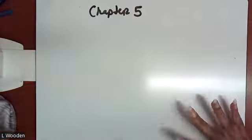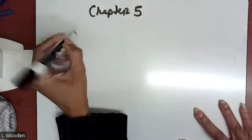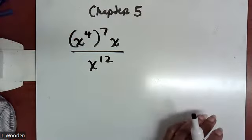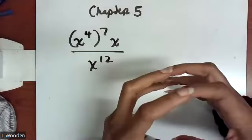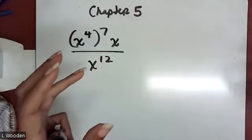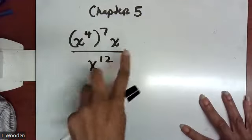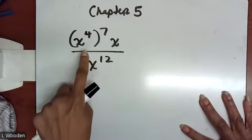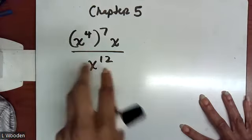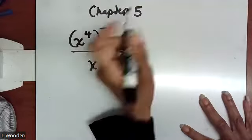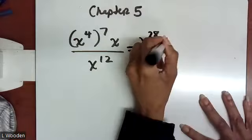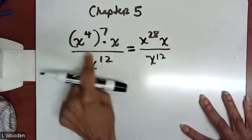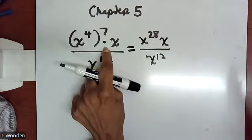The important part is being able to deal with exponents when they're with variable components. We apply the rules, which are really shortcuts because you can always just expand and count how many variables are present. Always follow your order of operations — it never goes away, whether they're variables or just numbers. So parentheses and exponents first: x to the fourth power being raised to the seventh power. The rule says multiply those exponents together to get 8x to the 28th over x to the 12th.